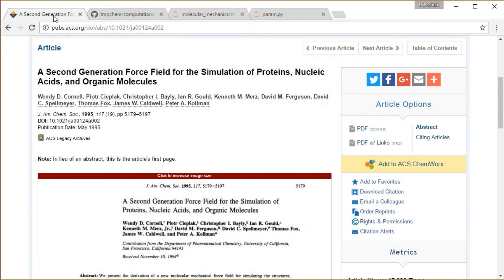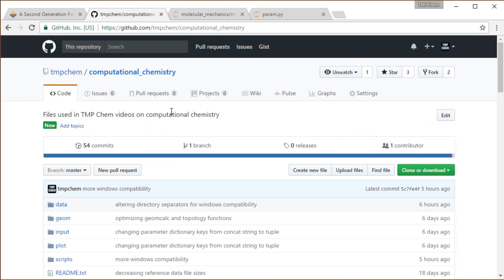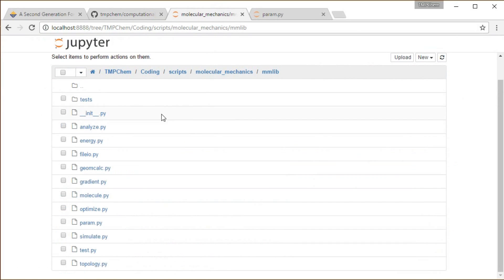So for example in the AMBER 95 paper from this citation here that I've been implementing on this Github repository, TMPChem Computational Chemistry, we have the Jupyter Notebook with a cloned copy of that in the directory scripts, molecular mechanics, mmlib, in this param.py module.